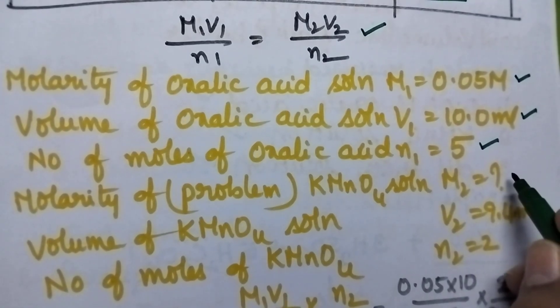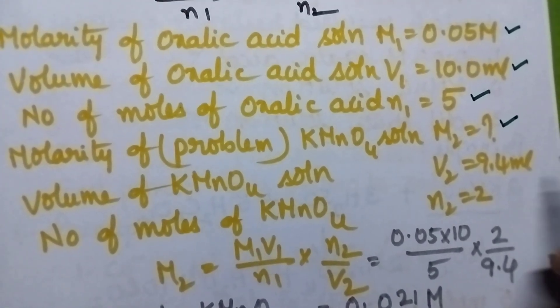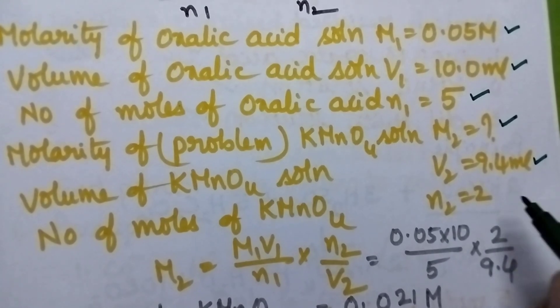Molarity of potassium permanganate solution we have to find out. Volume of potassium permanganate solution V2 is 9.4 ml. Number of moles of potassium permanganate N2 is 2.